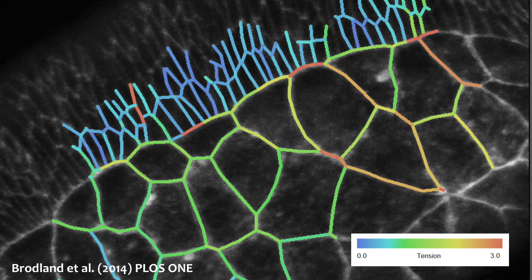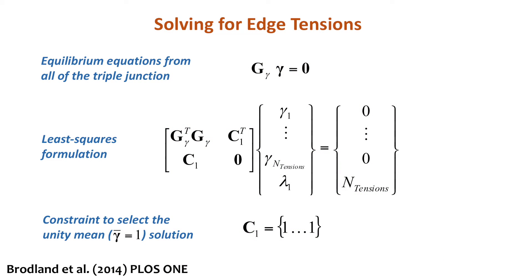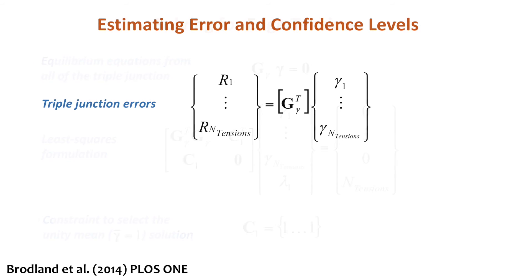In practice, we solve all of the equations simultaneously. Doing so allows us to calculate the error at each triple junction and estimate confidence levels for individual calculated tensions.